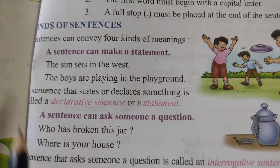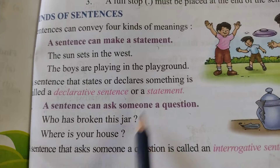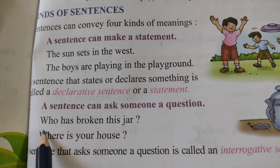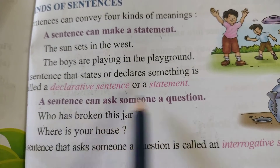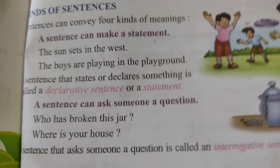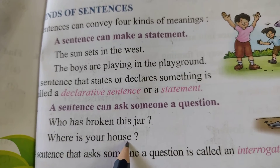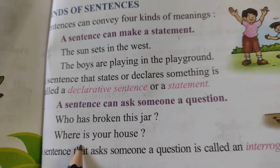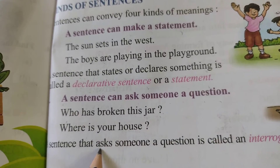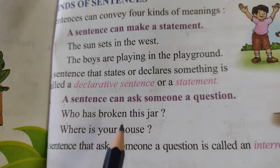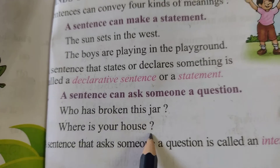Coming to the next kind of sentence: a sentence can ask someone a question — who has broken this jar? That means we can ask a question by starting with a capital letter and ending with a question mark. Where is your house? What is your name? How old are you? These are sentences, but ending with a question mark, they become an interrogative sentence or a question.